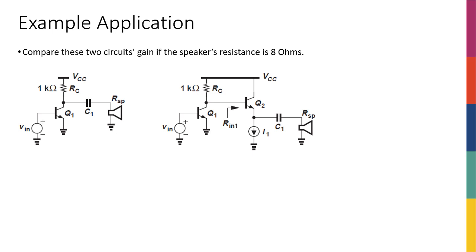Let's see why having a low output impedance is actually important with a real example — the speaker example. We have a microphone, a speaker, and we're trying to amplify the microphone signal and play it on the speaker. We represent speakers with a simple resistor, and they really are simple resistors — very small ones. For example, an 8-ohm resistor. If you go online and buy any speaker, the datasheet will mention its ohmic value.